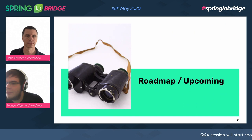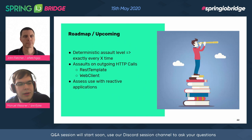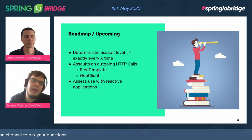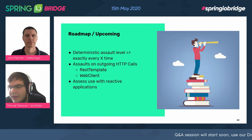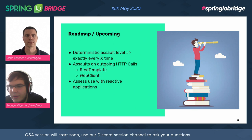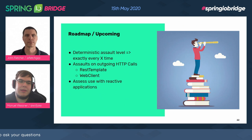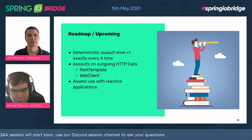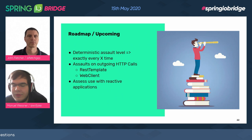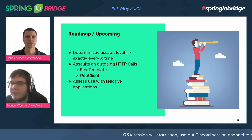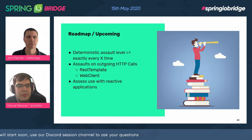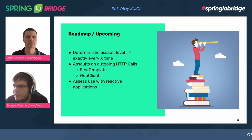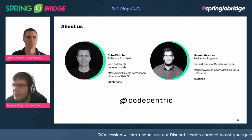On our roadmap for upcoming features for Chaos Monkey for Spring Boot: the assault level is not really deterministic — level two means about every second call, not exactly every second call — so we're thinking about making it more deterministic. Also, we don't currently have a way to attack outgoing calls, so we're working on attacking RestTemplate or the newer WebClient. And we haven't done much with the reactive stack yet — we want to have more of that tested and think about useful features for WebFlux and Reactor.